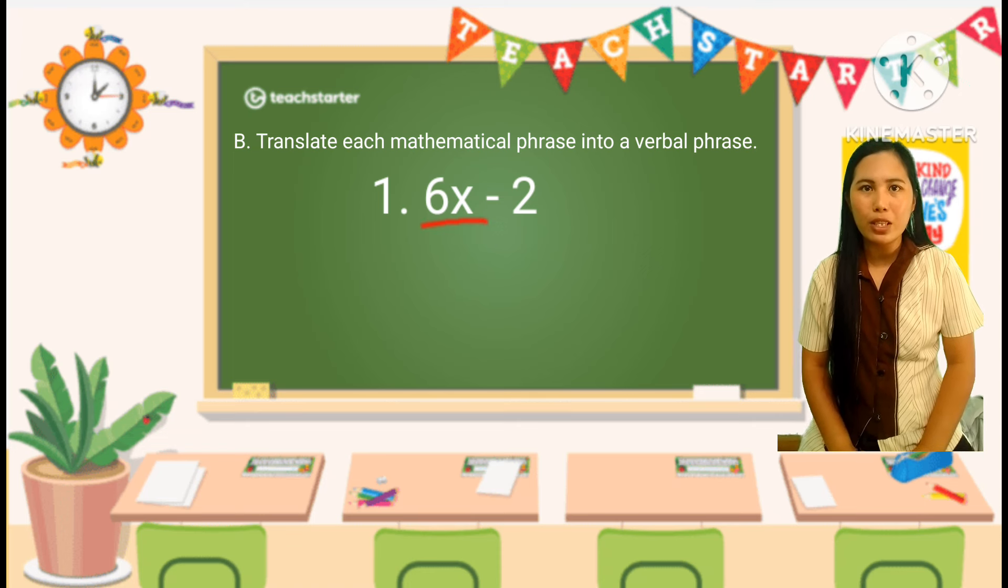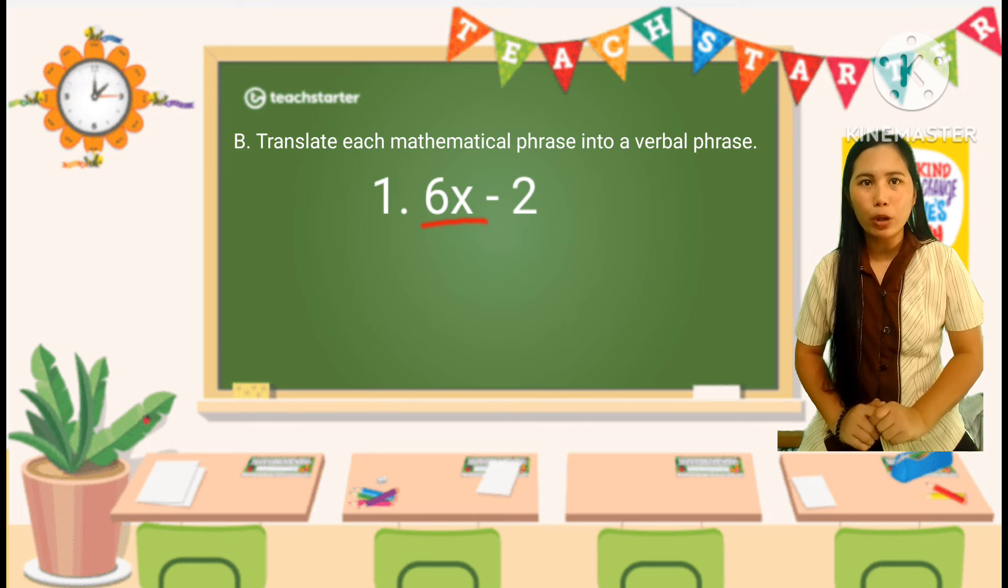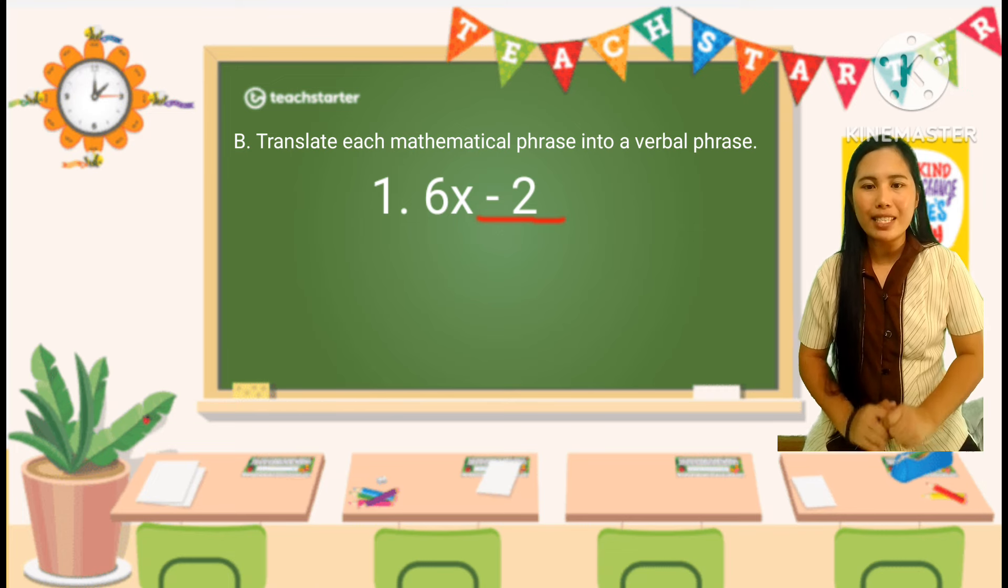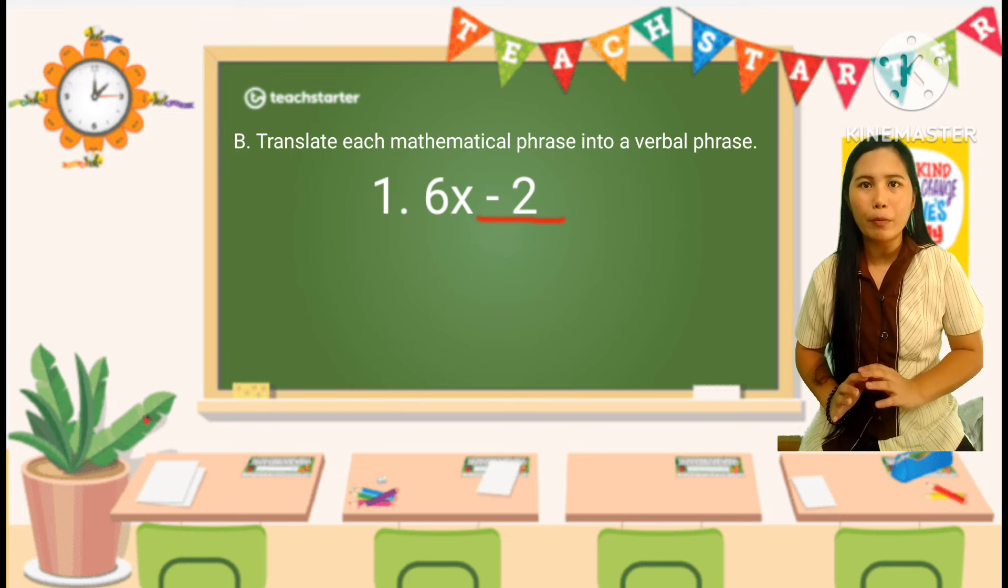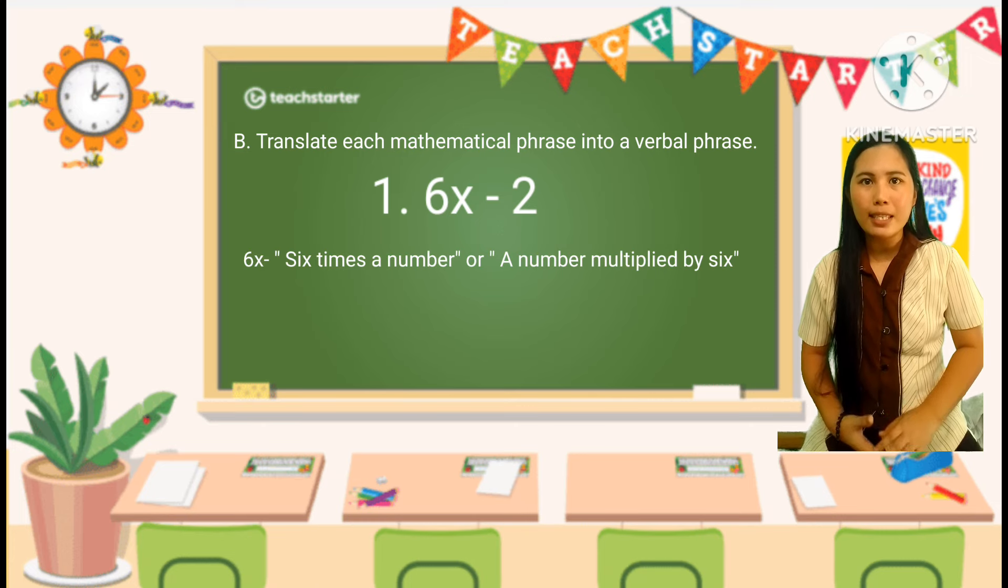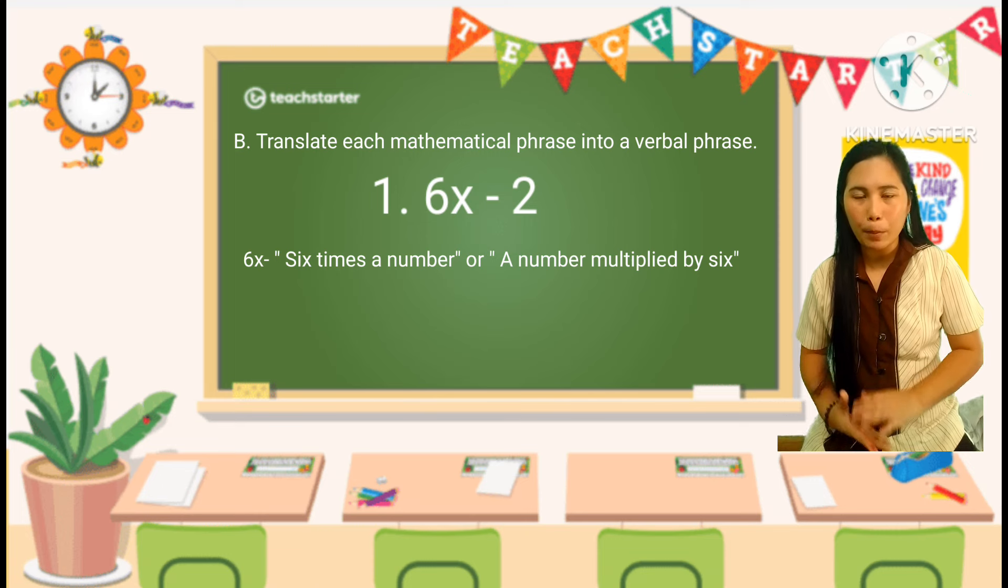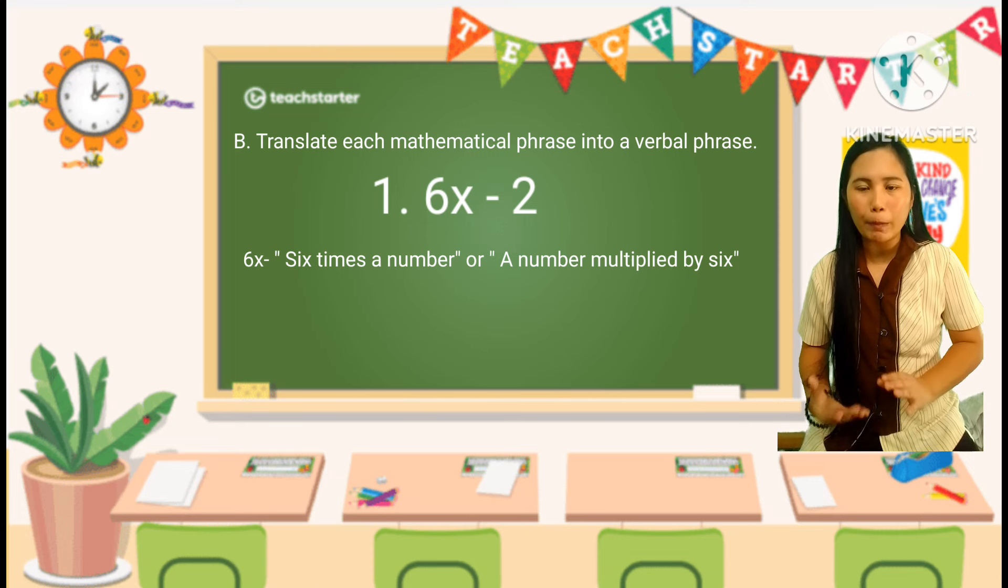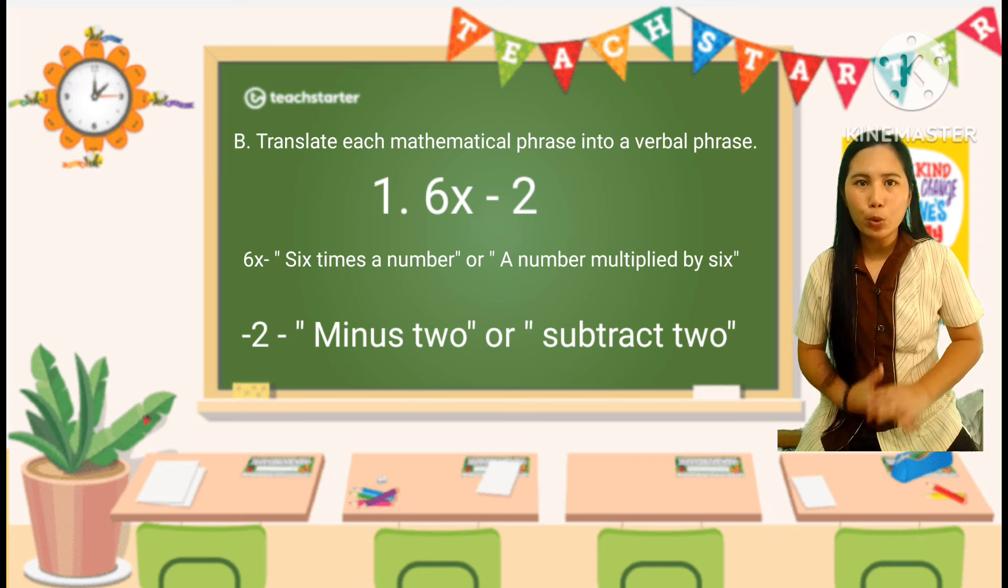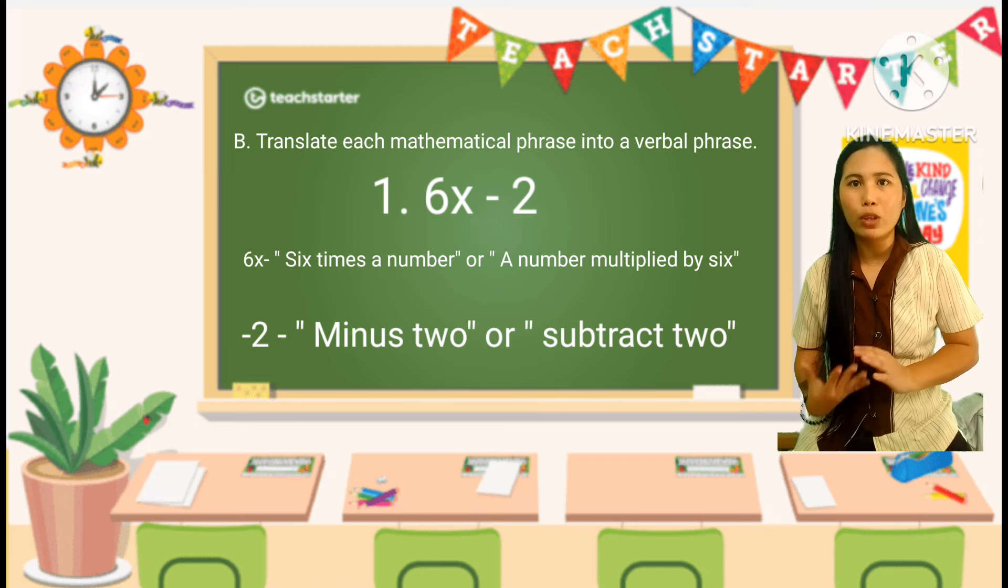6x, this term consists of the product of 6 and x, meaning x multiplied by 6. Negative 2, this term is being subtracted from the previous term. So, translate the parts into words. 6x can be described as 6 times a number or a number multiplied by 6. And negative 2 can be described as minus 2 or subtracted 2.